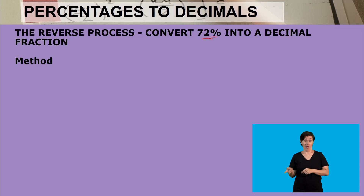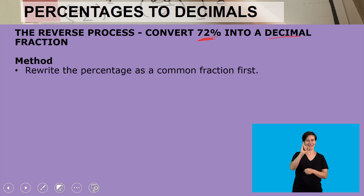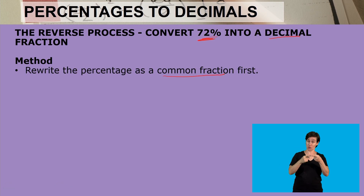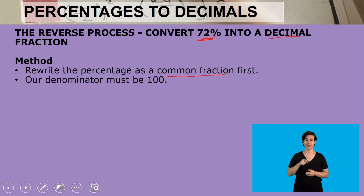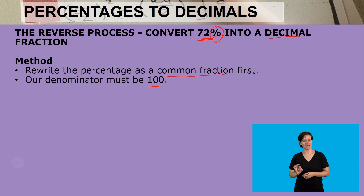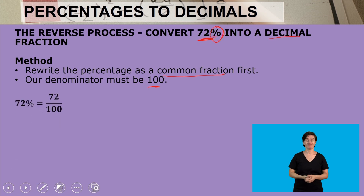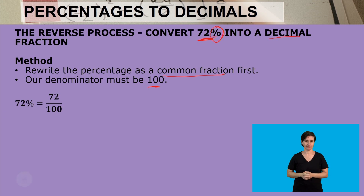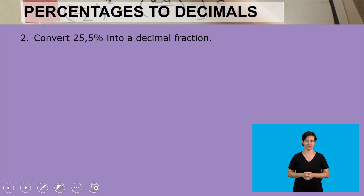Now the reverse process, where we are given a percentage and we are to change it into a decimal. The method we are using is to rewrite the percentage as a common fraction first, because it helps us understand that part. Our denominator must be a hundred, because that hundred goes with the sign of a percentage. So 72%, which is what we are given, is seventy-two hundredths, which is 0.72.